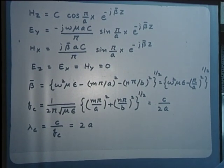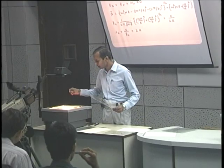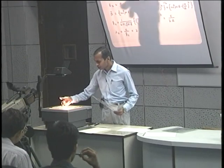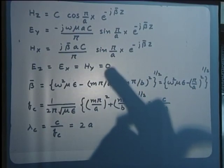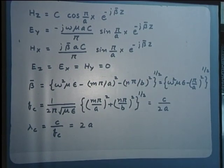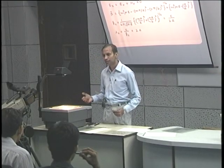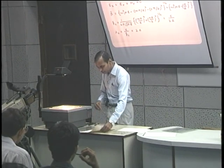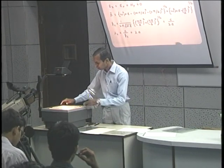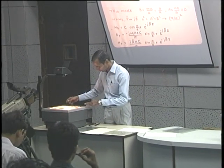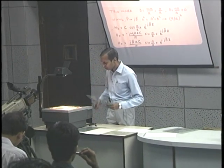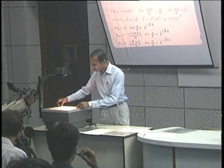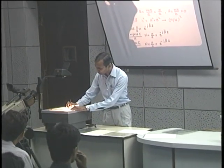The procedure, which should by now be fairly standard, is to express these field expressions — which are in phasor notation — incorporating the time variation explicitly. We multiply these field expressions by e^(jωt) and take out the real part. The procedure is fairly straightforward and we say that we are incorporating the time variation.